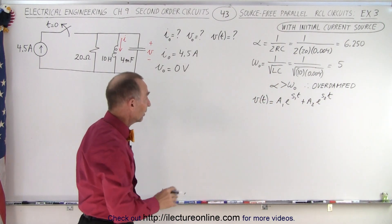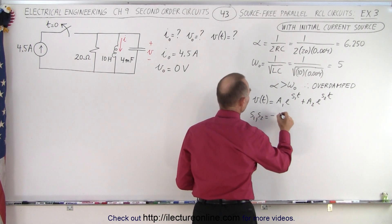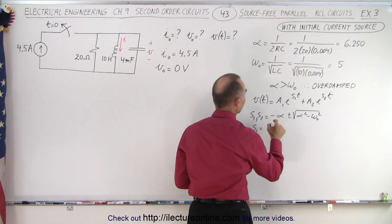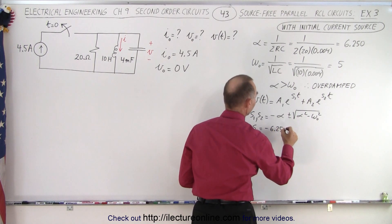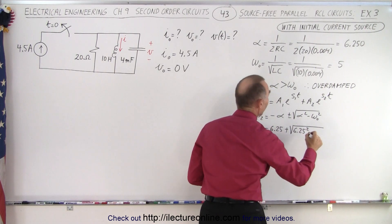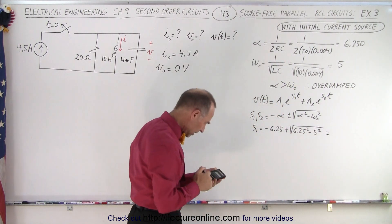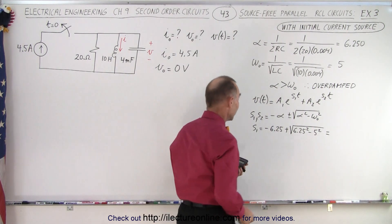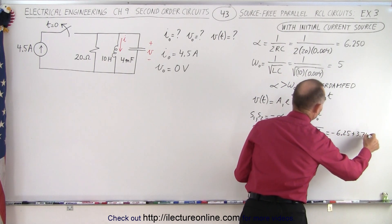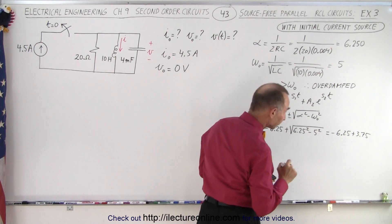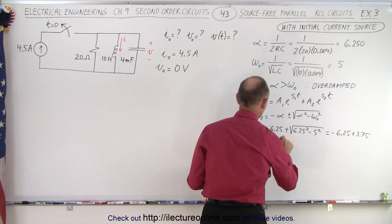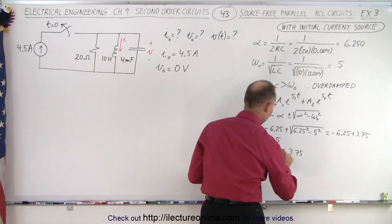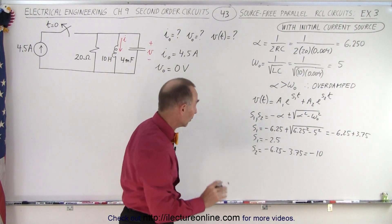The first thing we do is find s1 and s2 using: s1, s2 = −alpha ± √(alpha² − omega-naught²). For s1: −6.25 + √(6.25² − 5²) = −6.25 + √(39.0625 − 25) = −6.25 + 3.75 = −2.5. For s2: −6.25 − 3.75 = −10. So s1 = −2.5 and s2 = −10.